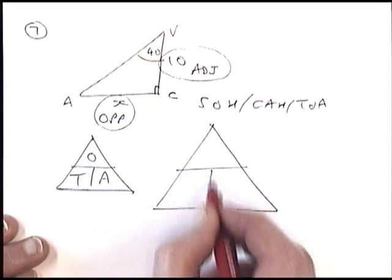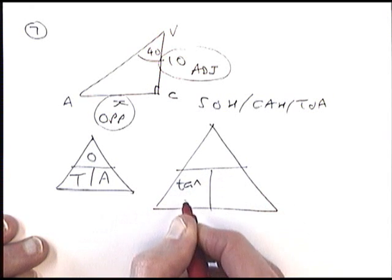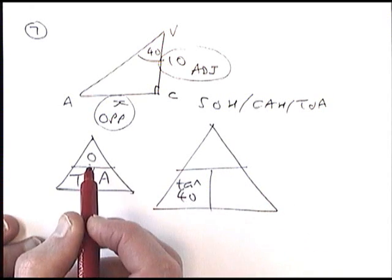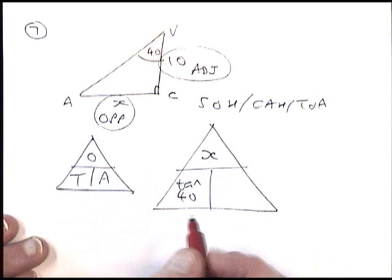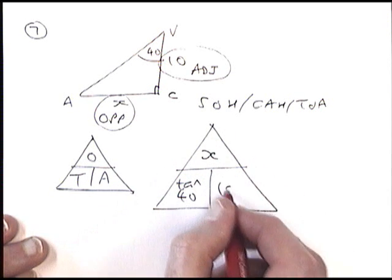So if I fill some things in, the angle always goes in here, and that's 40. The opposite, I don't know, that's my x. The adjacent, that is the 10.